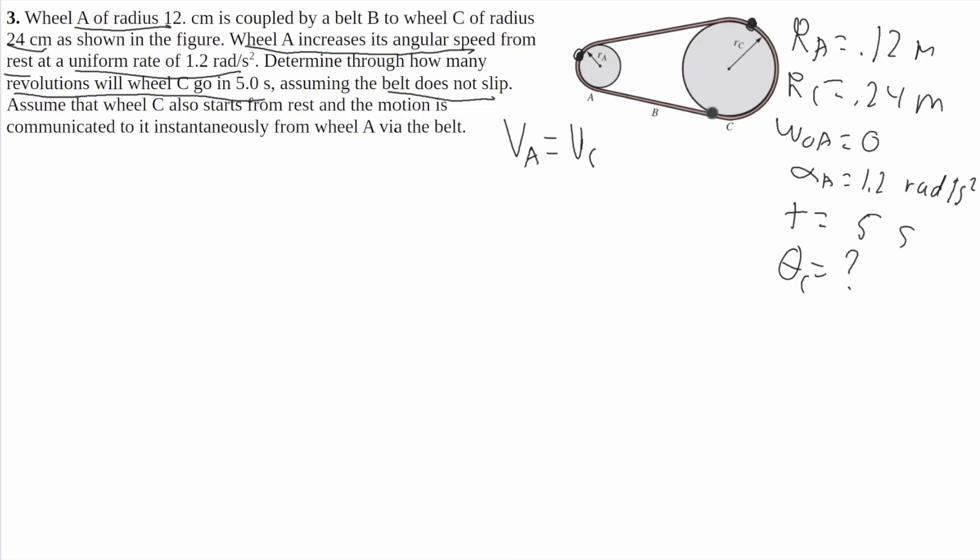Now the angular velocity will be different, but we can use the linear velocity as our link in order to use the information we'll have from wheel A and apply it to find what we need from wheel C.